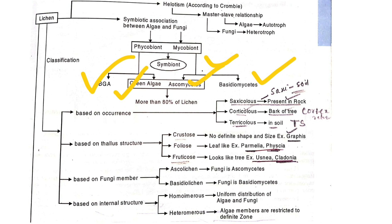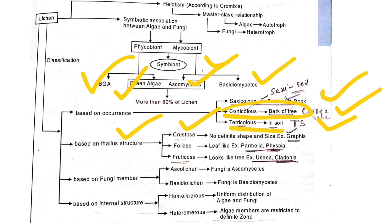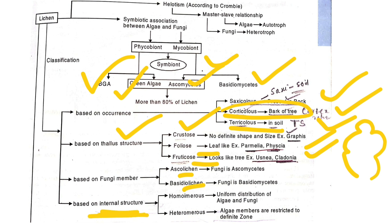Based on occurrence, lichens may be saxicolous (present on rock), corticolous (present on the bark of trees), or terricolous (present in soil). Based on structure: crustose (crust-like, closely attached), foliose (leaf-like), or fruticose (tree or bush-like). Based on fungal member: ascolichen or basidiolichen. Based on internal structure: homoisomerous (uniformly distributed) or heteromerous (algal members restricted to an algal zone).